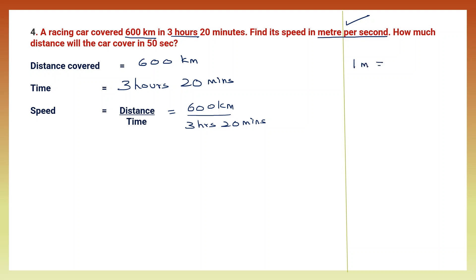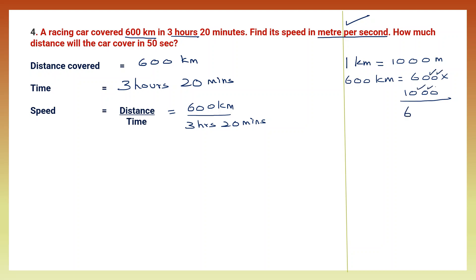600 into 1,000: six ones are six, with five zeros — that is 600,000 meters. So we have converted to meters. Now we need to convert 3 hours and 20 minutes into seconds. First, convert to minutes: 3 into 60 is 180, plus 20 is 200 minutes. Then, in one minute there are 60 seconds, so 200 minutes is 200 into 60 — two sixes are 12, with three zeros — that is 12,000 seconds.